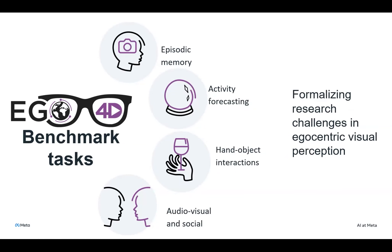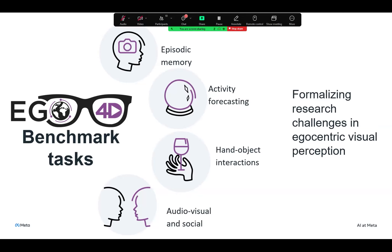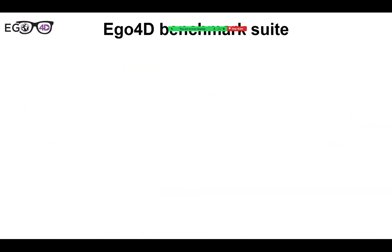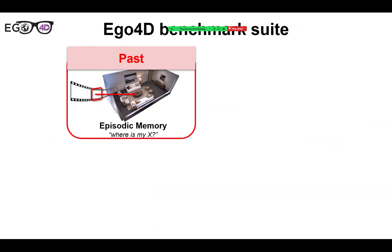About 250,000 hours of annotator time went into creating the annotations that support these benchmarks. The tasks take you in terms of egocentric perception from the past to the present to the future. In the past, this is where we talk about episodic memory — the ability to ask questions about everything that happened before in a long egocentric video, such as 'Where did I leave my keys?' or 'Where was I sitting when I had dinner last night?'